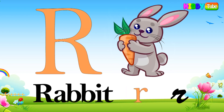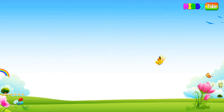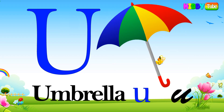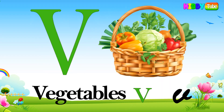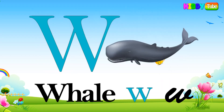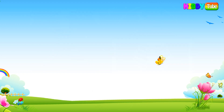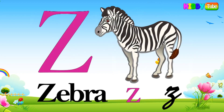R for rabbit, S for snake, T for turtle, U for umbrella, V for vegetable, W for whale, X for x-ray, Y for yak, Z for zebra.